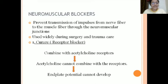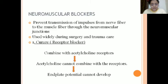Neuromuscular blockers are drugs that stop the nerve impulse or stop the neuromuscular junction transfer of information. They are used during surgeries and trauma, as they prevent signals from going from the brain to the muscle, helping stop the patient from feeling pain. The first blocker is curare, also known as a receptor blocker, because it blocks the acetylcholine receptors, ultimately preventing the end plate potential from building up and stopping neuromuscular activity. The second is bungarotoxin, a toxin from the deadly venom of snakes, which also blocks acetylcholine receptors.